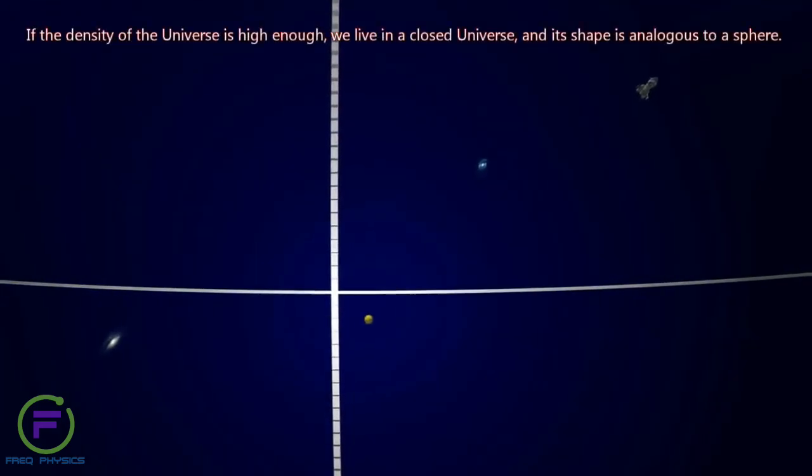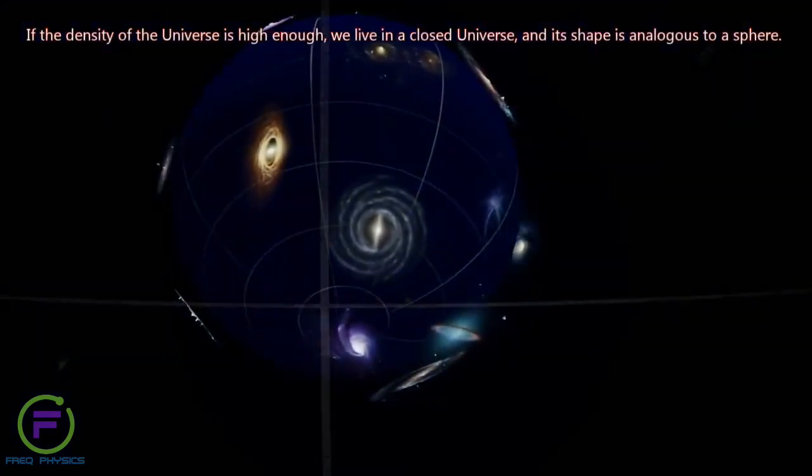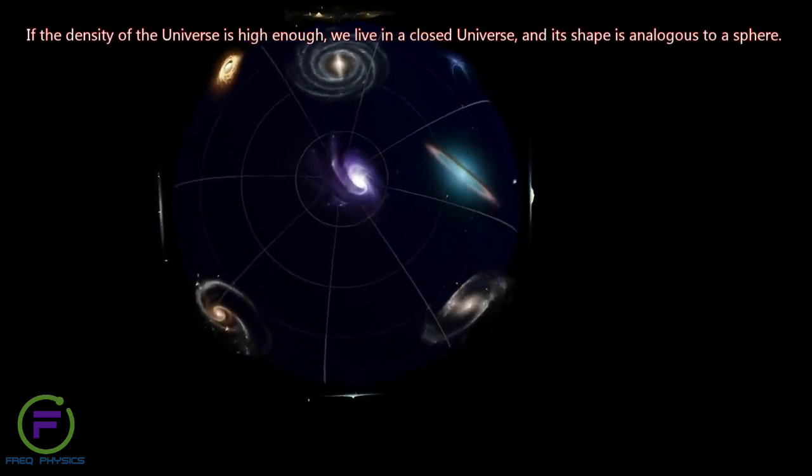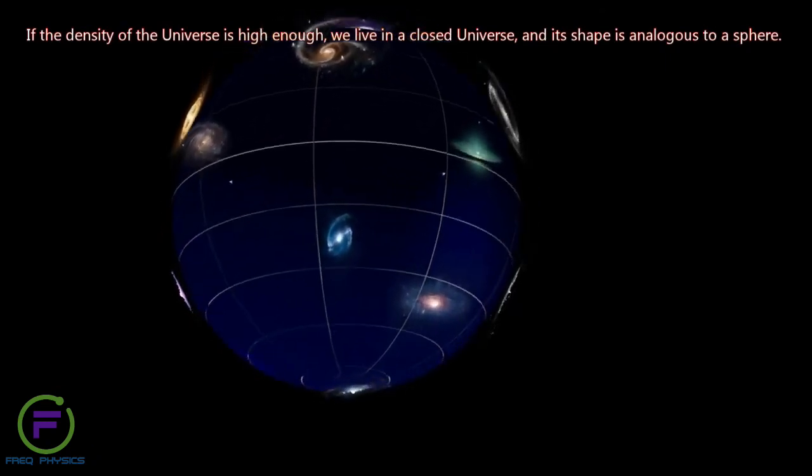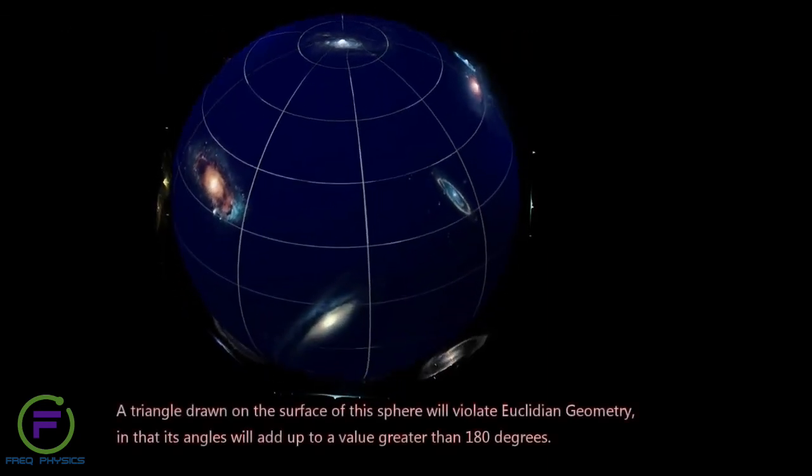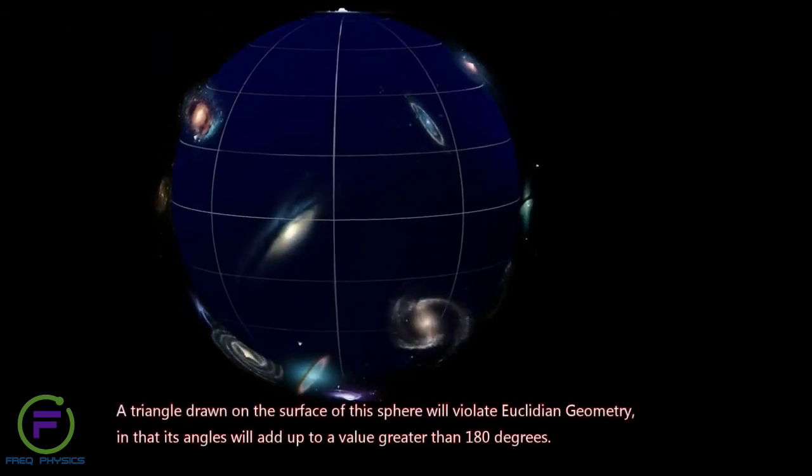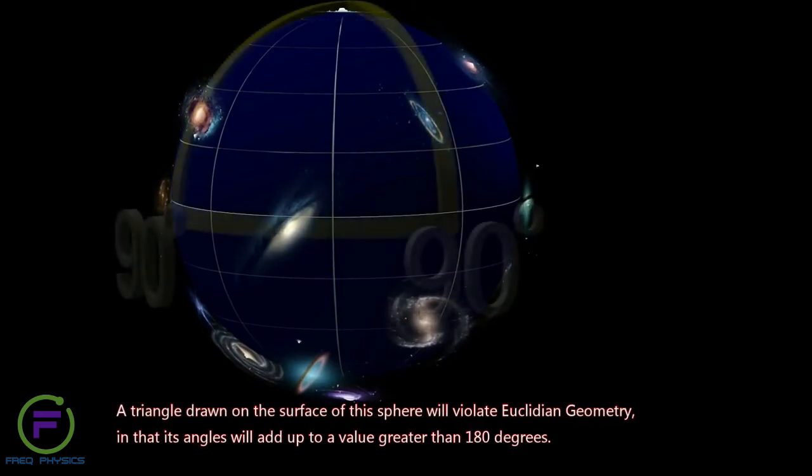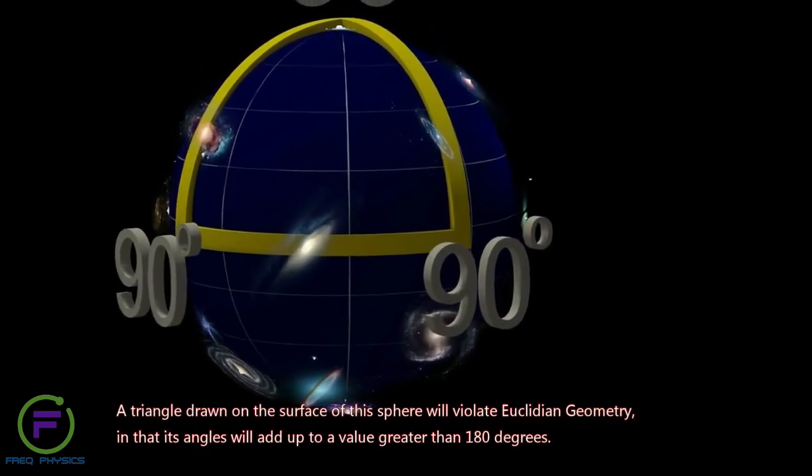If the density of the universe is high enough, we live in a closed universe, and its shape is analogous to a sphere. A triangle drawn on the surface of this sphere will violate Euclidean geometry, in that its angles will add up to a value greater than 180 degrees.